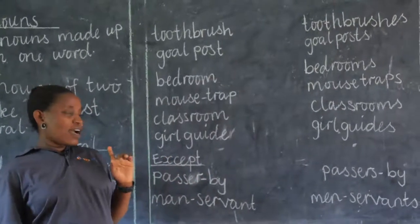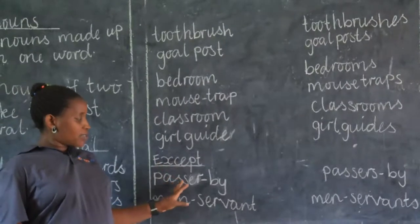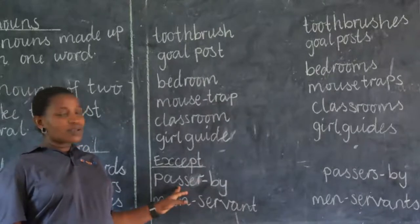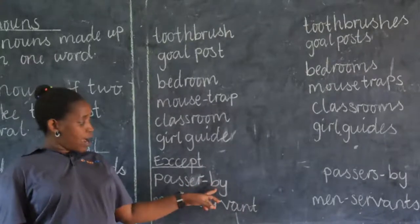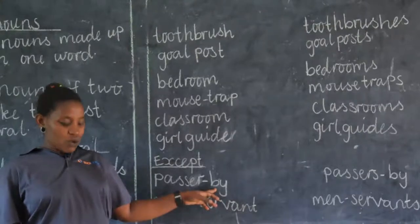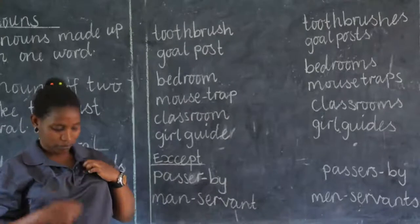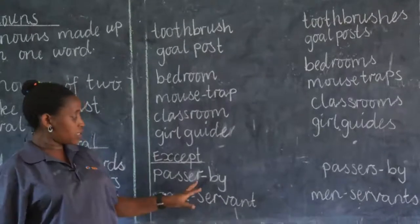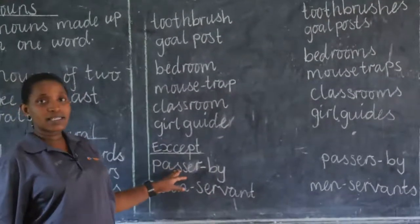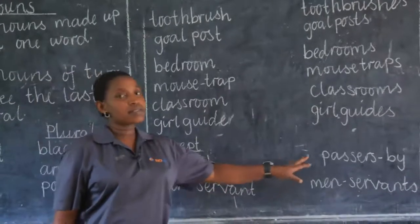But we have exceptions. For example, passer-by. Passer is a noun, but by is not a noun. Since by is not a noun, we are going to make the first noun plural. So it is going to be passers-by.